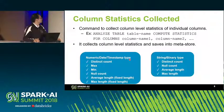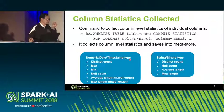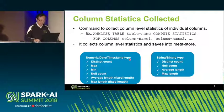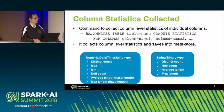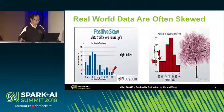In Spark 2.2, we only collect those statistics at the table level — for all records in a table. But we do not collect the frequency count for each value of a column. So basically, when we try to estimate, we just assume that it is a uniform data distribution.